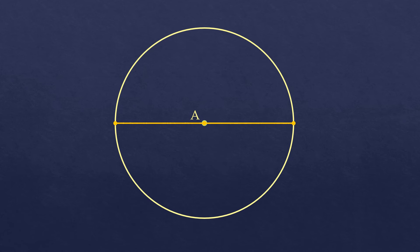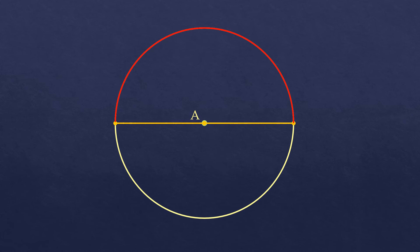Now, let's say we have this kind of central angle — it looks like a straight line, but it's an angle composed of two radii. Its intercepted arc is a semicircle, which measures 180 degrees, since a full circle is 360 degrees and half of it is 180. So the measure of this central angle is 180 degrees.